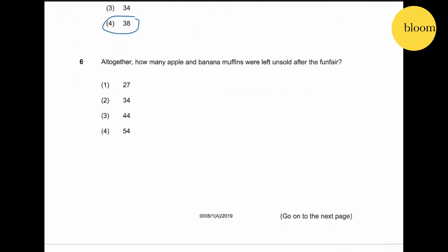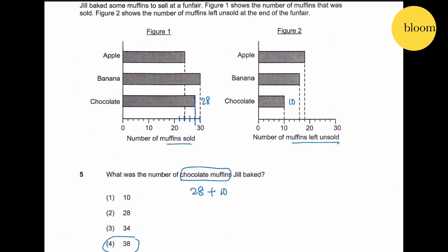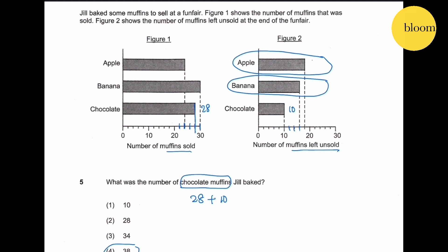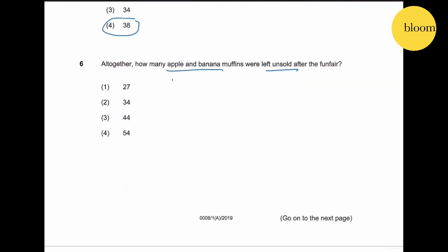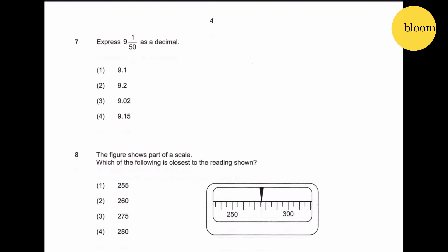Altogether, how many apples and banana muffins were left unsold after the fun fair? Apple and banana - apple is 18, this is 16, therefore 18 plus 16 will give you 34.